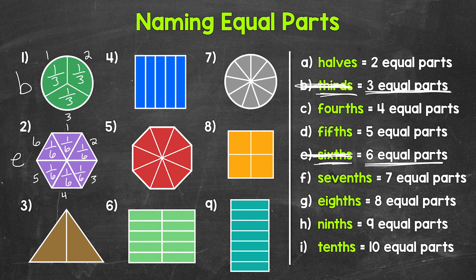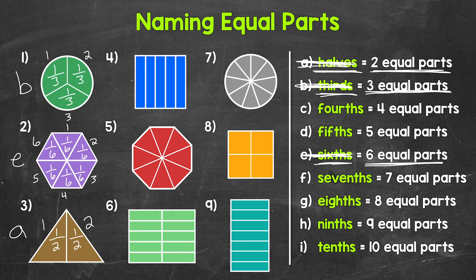Moving on to number three. We have a triangle — that's our whole — and it has been divided into one, two equal parts. We call two equal parts halves. So let's put an A next to number three and cross off halves. Each one of those equal parts is one half of the whole. Next, number four, we have a square — that's our whole — and it has been divided into one, two, three, four, five equal parts. So five equal parts — we call five equal parts fifths. So let's put a D next to number four and cross off fifths. Now each one of those equal parts is one fifth of the whole square.